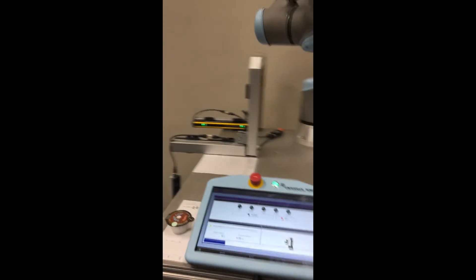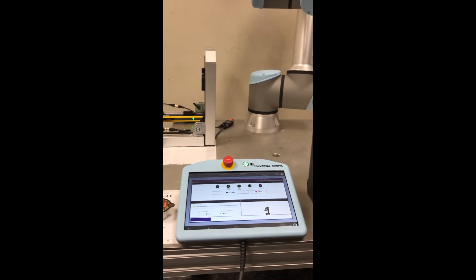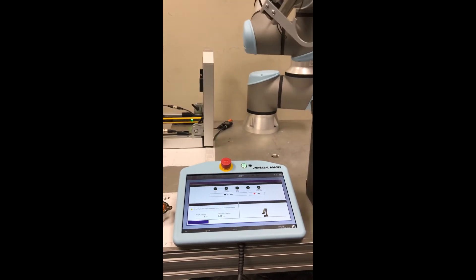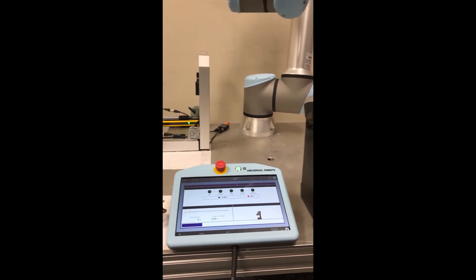So the reason we have to do this is because some of the safety light curtains come with a pulsing output that the universal robot cannot properly identify with. That's the reason for going through the safety relay.